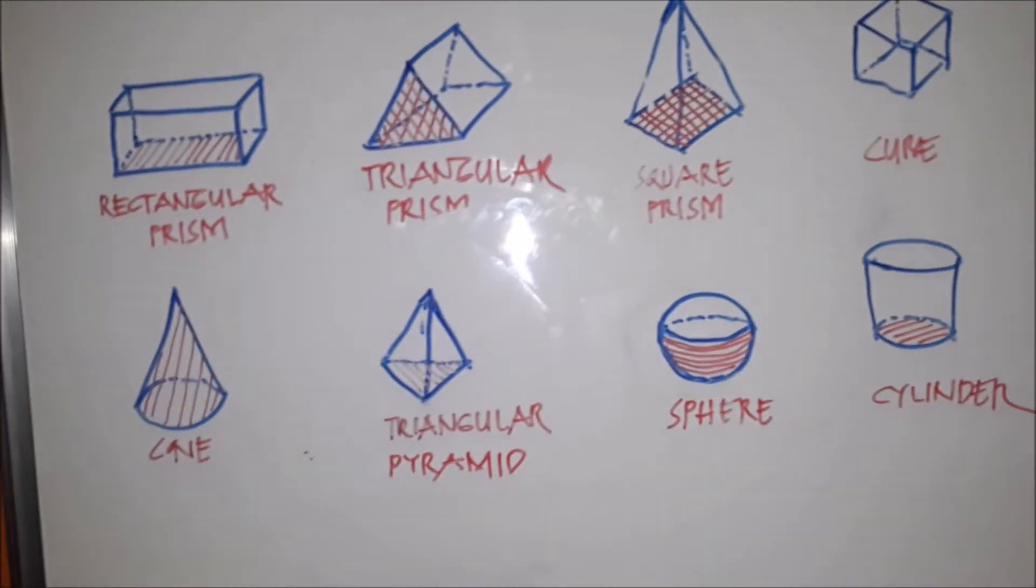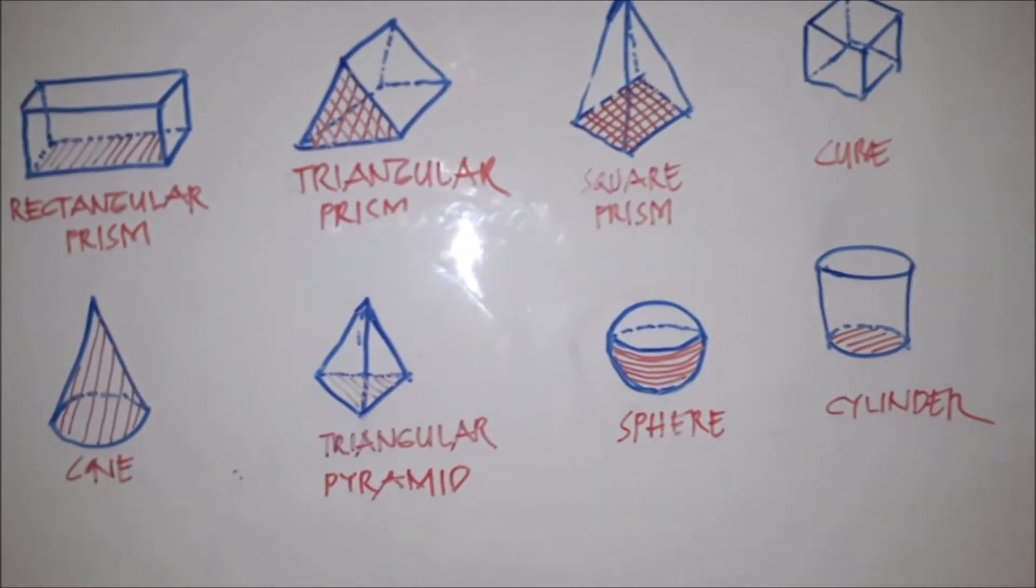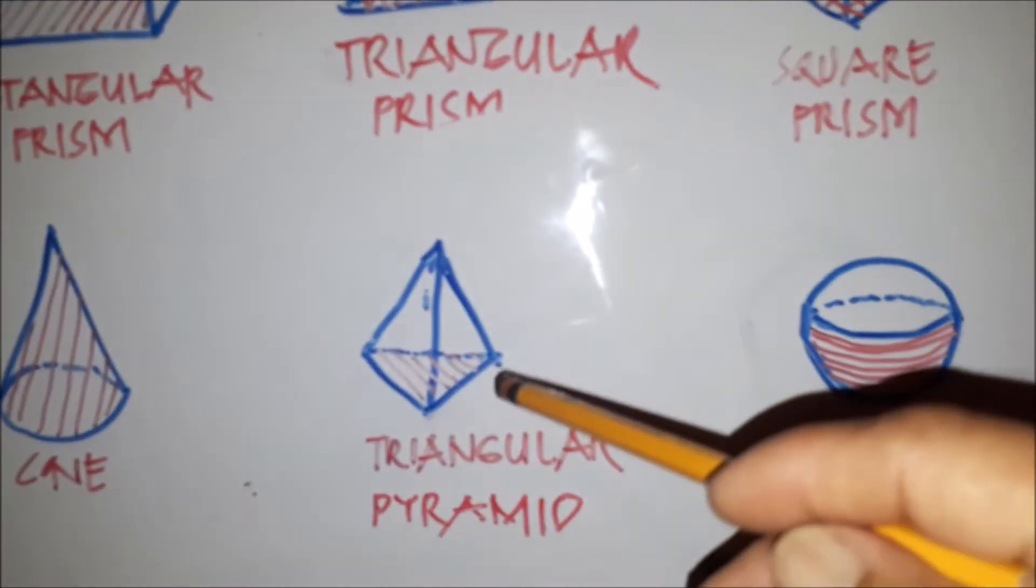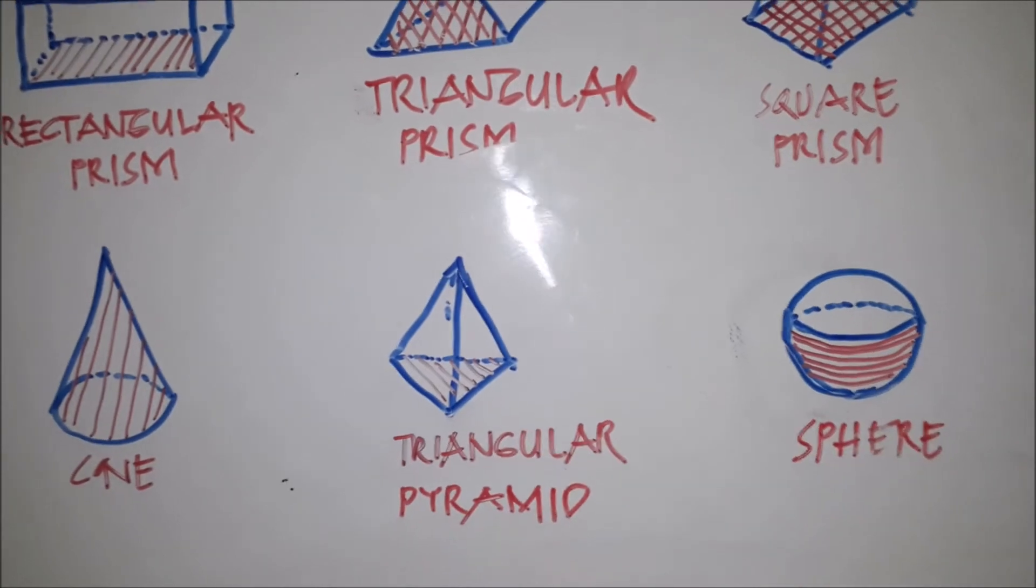And then we have this triangular pyramid, popular in Egypt. We have the triangle on the side and on the base.